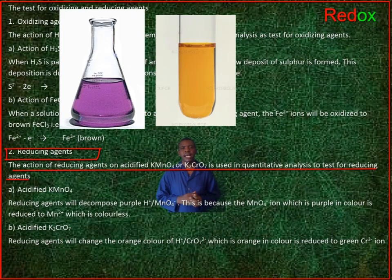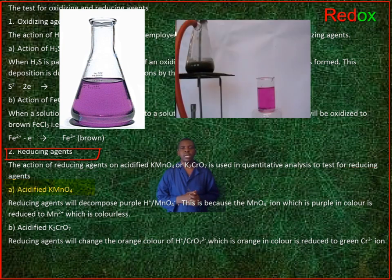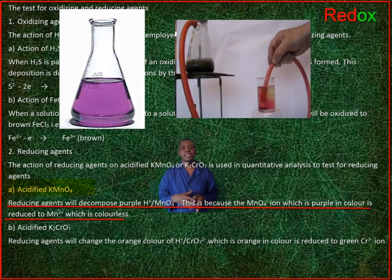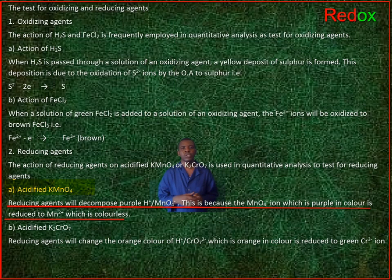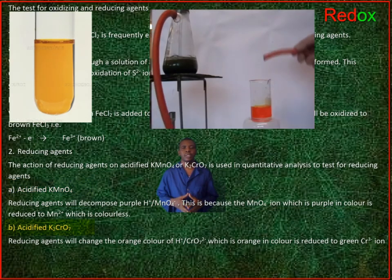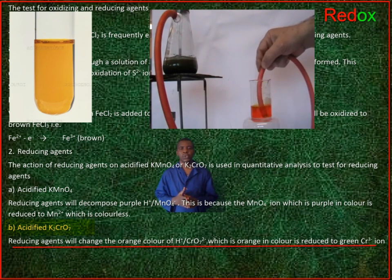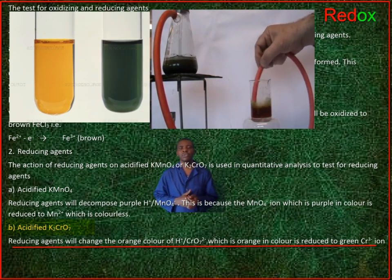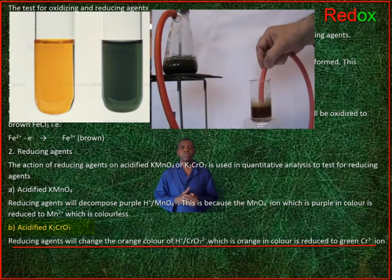2. Reducing agents. The action of reducing agents on acidified potassium permanganate or potassium dichromate is used in quantitative analysis to test for reducing agents. A. Acidified potassium permanganate: reducing agents will decompose the purple permanganate ion in acid medium, because the manganate ion, which is purple in color, is reduced to manganese(2+), which is colorless. B. Acidified potassium dichromate: reducing agents will change the orange color of the dichromate ion in acid solution; the dichromate ion is reduced to green chromium(3+) ions.